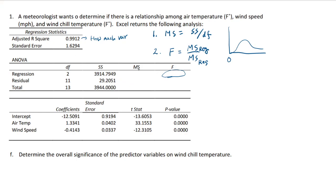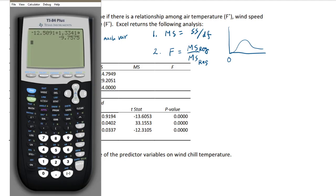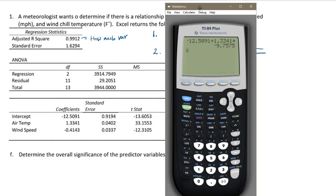That will give you the significance. So let's try to do the calculation using a calculator. We have 3914.7949 divided by 2, because 2 is the degrees of freedom. That gives you 1957.397.